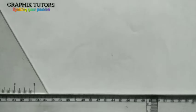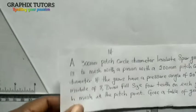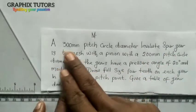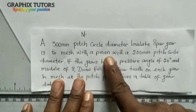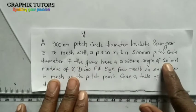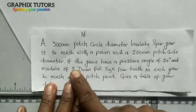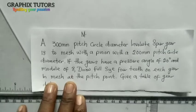Good everyone, my name is Graphics. Today we want to study an aspect of engineering drawing which is called gear, where we'll be constructing the size of the tooth of the gear. In our previous video we constructed a small gear; now we want to construct a machine gear. The question says: a 300mm pitch circle diameter involuted spur gear is to mesh with a pinion with a 200mm pitch circle diameter, if the gear has a pressure angle of 20 degrees and a module of 8. Draw full size, show teeth on each gear in mesh at the pitch point, and give a table of gear data.